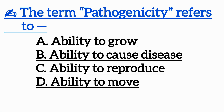Question 16: The term pathogenicity refers to — Option A: Ability to grow, Option B: Ability to cause disease, Option C: Ability to reproduce, Option D: Ability to move.